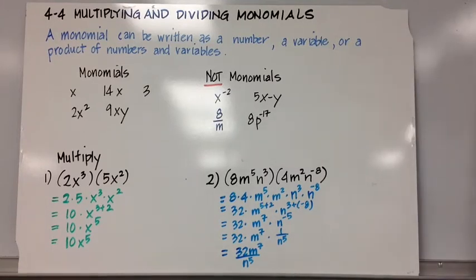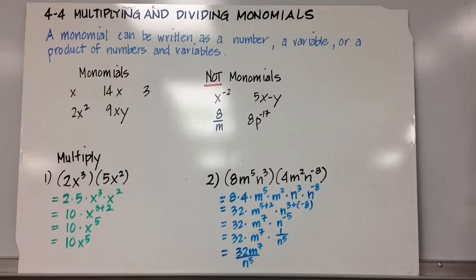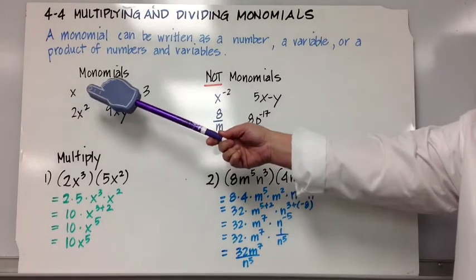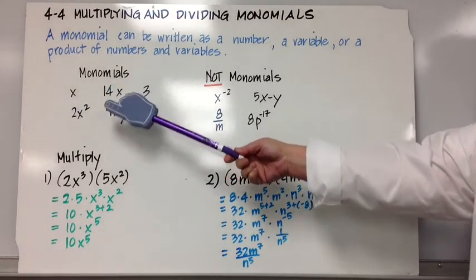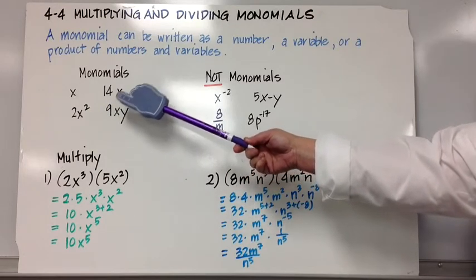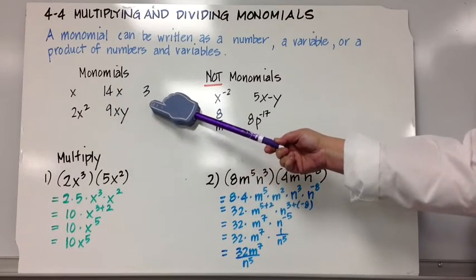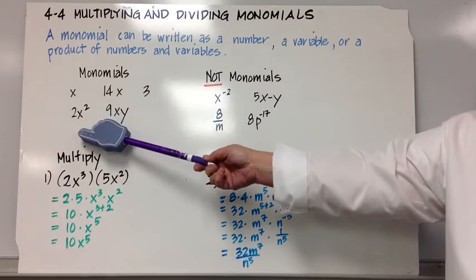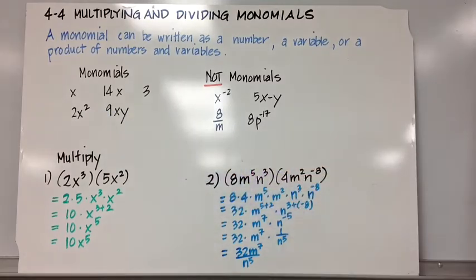Multiplying and dividing monomials. A monomial can be written as a number, a variable, or a product of numbers and variables. Some examples of monomials are x, a variable; 14x, the product of 14 and x; 3, a number; 2x squared; and 9xy. All examples of monomials.